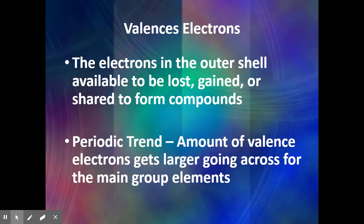A valence electron is an electron that is in the outermost energy level. They can be lost, gained, or shared with other elements to form compounds. These electrons are what make atoms reactive — the fact that they either want to get rid of them or gain them. The more unstable they are, the fewer they have, or if they have a lot and just need one more, this is what makes them want to form compounds.